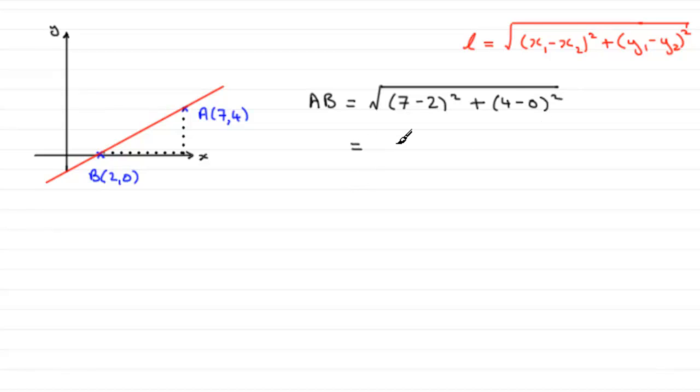So, what we've got here is the square root then of 7 minus 2, all squared, so that's going to be 5 squared, plus 4 minus 0, 4, 4 squared. So, you can see, this length along here was 5 units, this was 4 units up here.